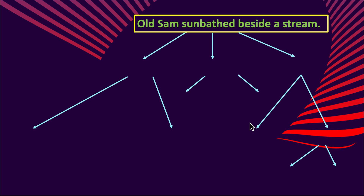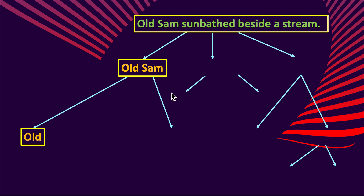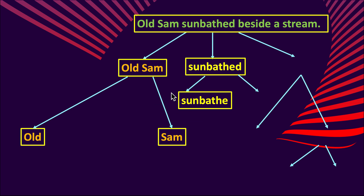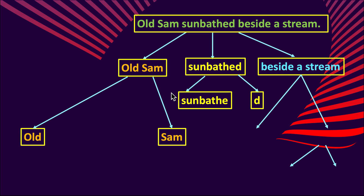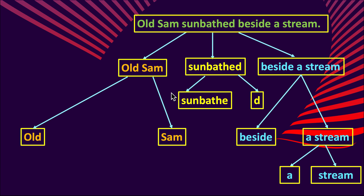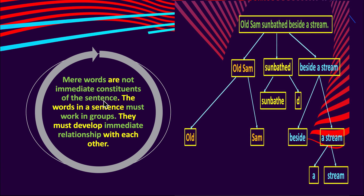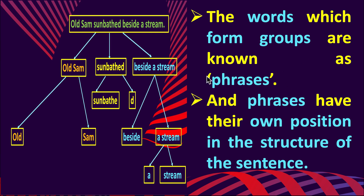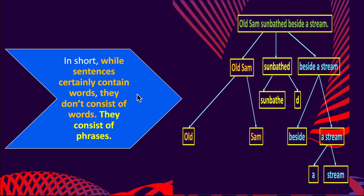Now look at the correct structural analysis of the sentence 'Old Sam sunbathed beside a stream.' It is divided into constituents: 'old Sam' is split into 'old' and 'sam'; 'sunbathed' is placed in its own constituent with a marker for past tense; 'beside a stream' forms another constituent, further divided into 'beside' and 'a stream', which in turn splits into 'a' and 'stream.' From this we see that mere words are not the immediate constituents of sentences. Words must work in groups, and those groups are known as phrases, which have their own position in the structure of the sentence. Sentences don't consist of words — they consist of phrases.